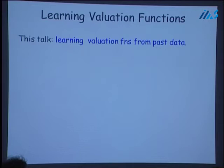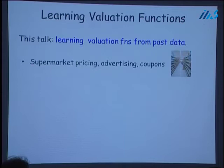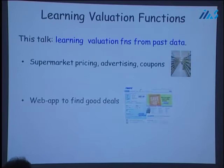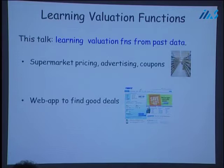This is an important problem motivated by various applications. It is very common for supermarket chains today to keep track of the purchases of customers, for instance by using a loyalty card. Given access to this data, it would be very useful to learn the valuation function of a customer in order to target advertisements or coupons better and ultimately to improve pricing. Similarly, companies like Orbitz or Expedia could learn the valuation function of a typical customer in order to make better recommendations and ultimately obtain better profit. In our work we study the problem of learning interesting, rich classes of valuation functions based on past data.